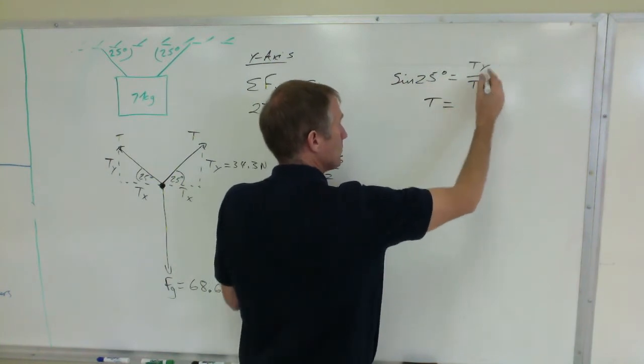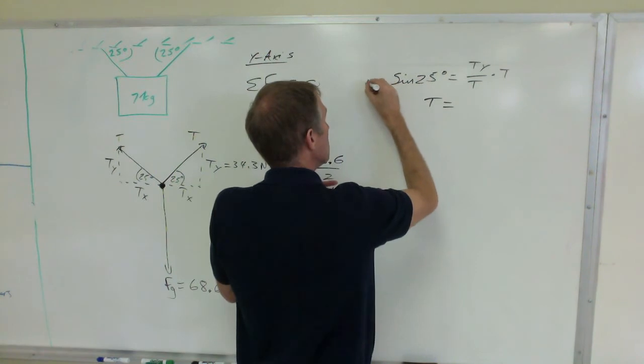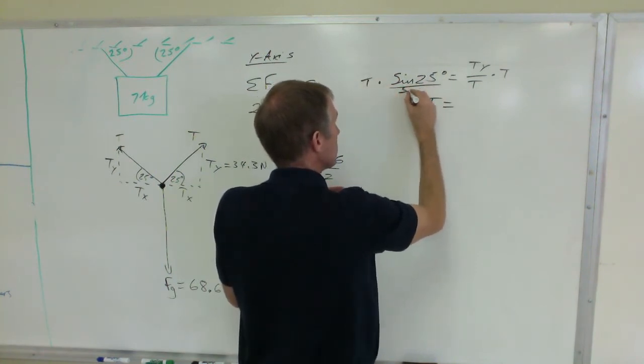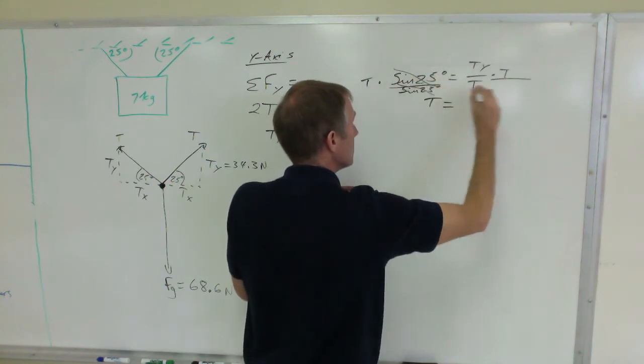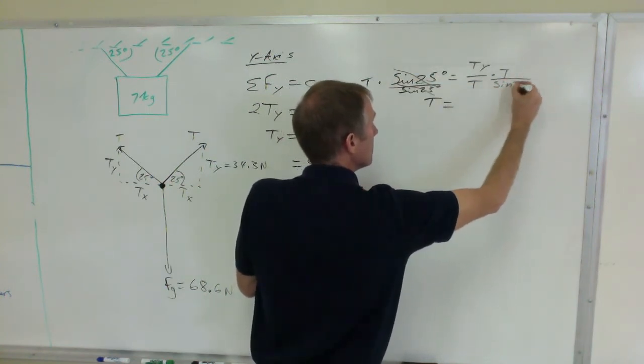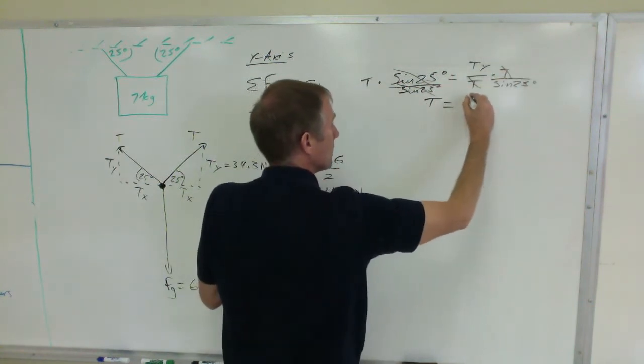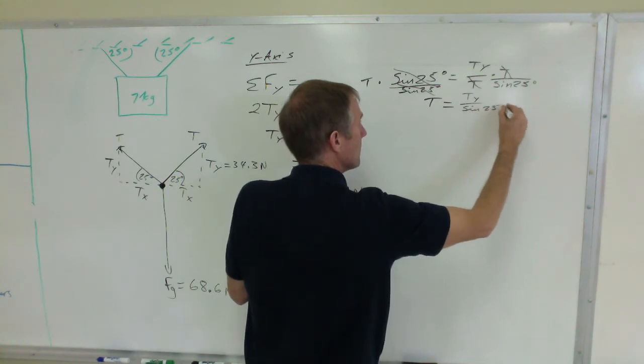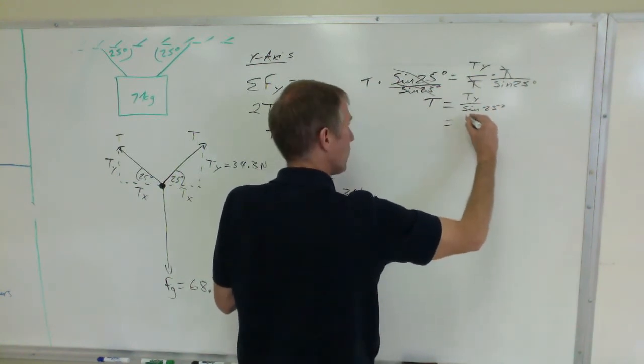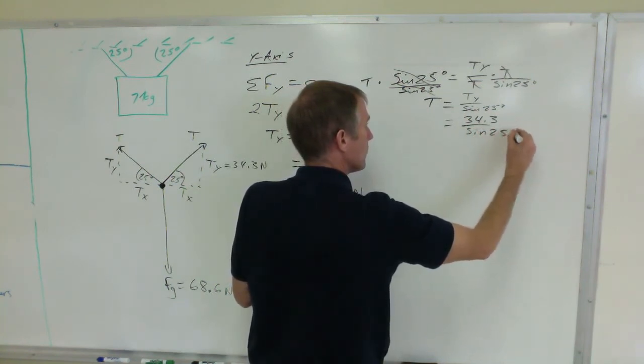So T equals, multiply both sides by T, divide both sides by the sine of 25, and the T's cancel over here. So you end up with Ty over the sine of that angle.